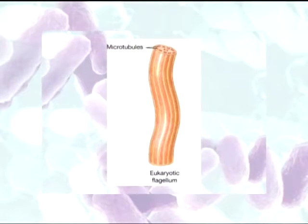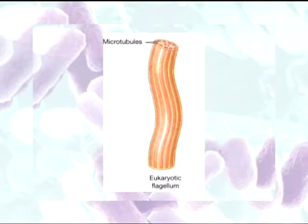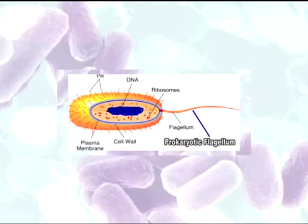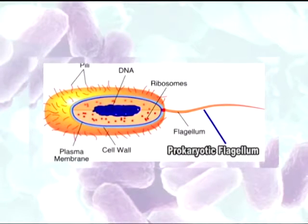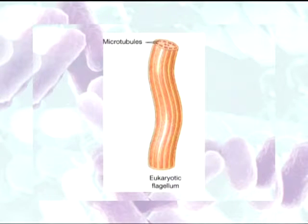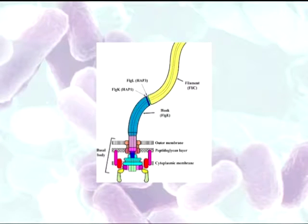Flagella are also present in some eukaryotes, but the prokaryotic flagellum is about one-tenth the size of the eukaryotic flagellum and about 10 to 20 micrometers in length. The bacterial flagellum differs from the eukaryotic flagellum in lacking the typical 9+2 microtubule arrangement and plasma membrane. Bacterial flagella are composed of long rigid strands of the protein flagellin, arranged in chains wound around a triple helix with a hollow central core.